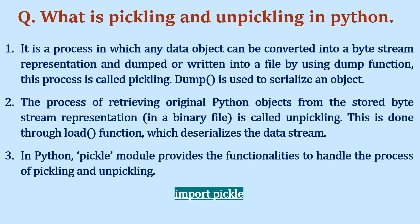What is pickling and unpickling in Python? Pickling is the process in which any data object is converted into a byte stream representation and written into a file using the dump() function — this serializes the data object. Unpickling is the reverse process: retrieving the original Python objects from the byte stream, done through the load() function, which deserializes the data stream. Both dump() and load() functions are available in the pickle module, which must be imported to use these operations.